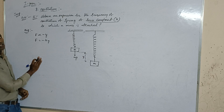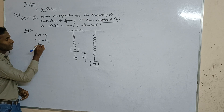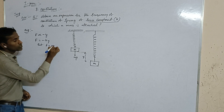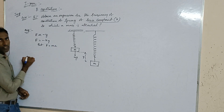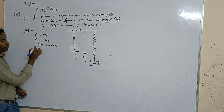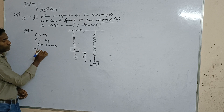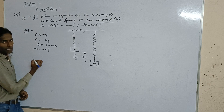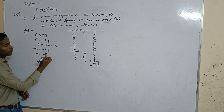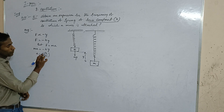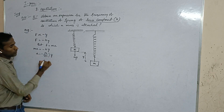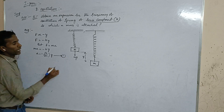According to Newton's second law, F equals ma. Replacing F, we get: ma equals minus k times y. Therefore, acceleration a equals minus k over m times y. This is Equation 1.